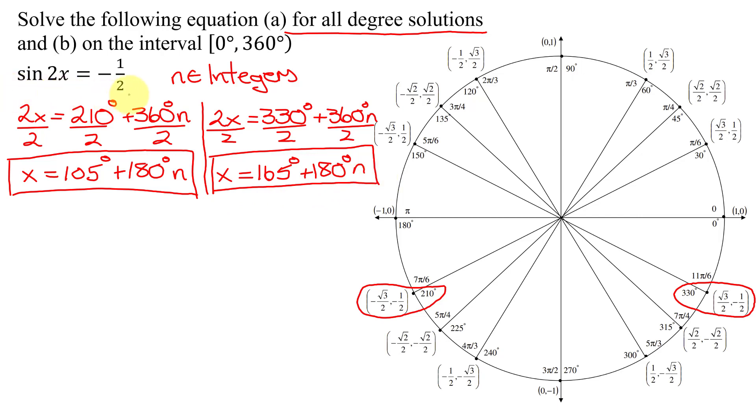Notice, if you'd have divided by 2 and then found coterminal angles, you'd have a 360 here instead of the 180. So that is the answer to, we've now found part A.